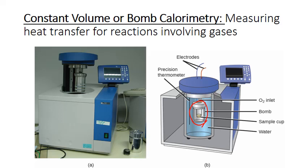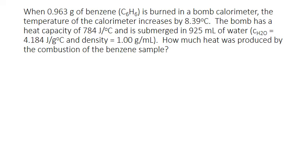Let's look at an example of this type of calorimetry. We combust 0.963 grams of benzene, chemical formula C6H6, in a bomb calorimeter. When we do so, the temperature of the calorimeter increases by 8.39 degrees Celsius. The bomb inside that calorimeter has a heat capacity of 784 joules per degree Celsius, and it's submerged in 925 milliliters of water, which has a heat capacity of 4.184 joules per gram degree Celsius and a density of 1 gram per milliliter. How much heat was produced by the combustion of this benzene sample?